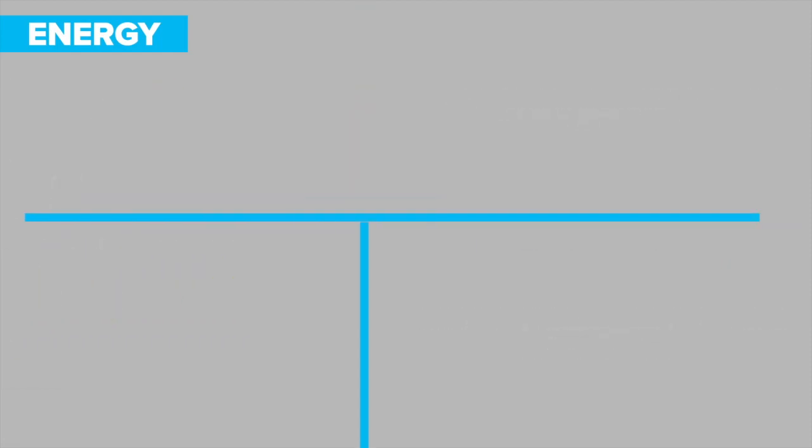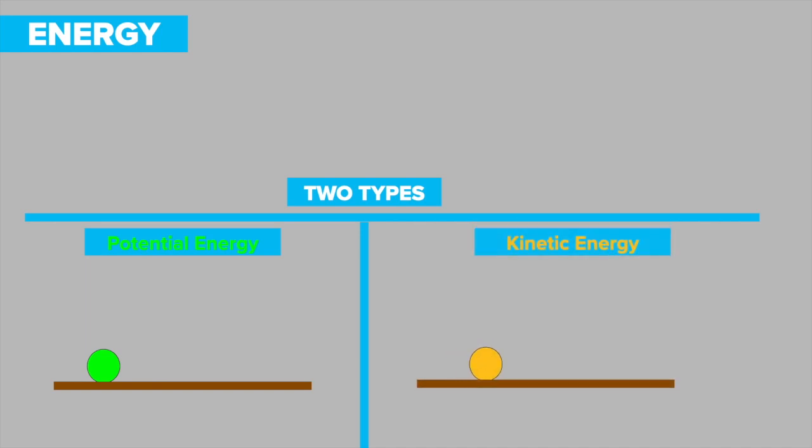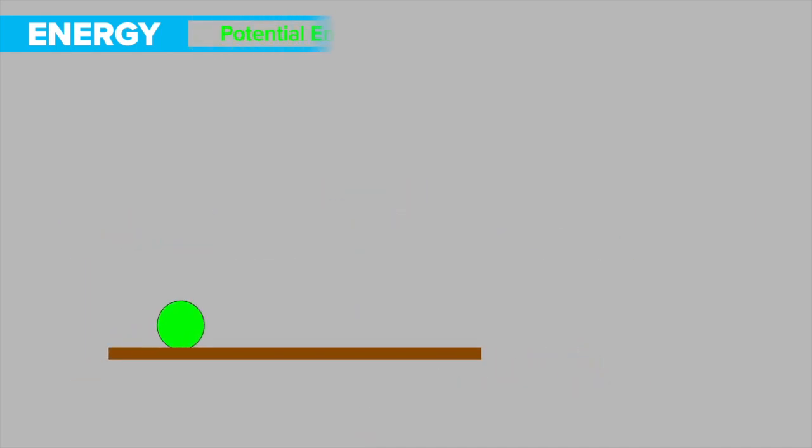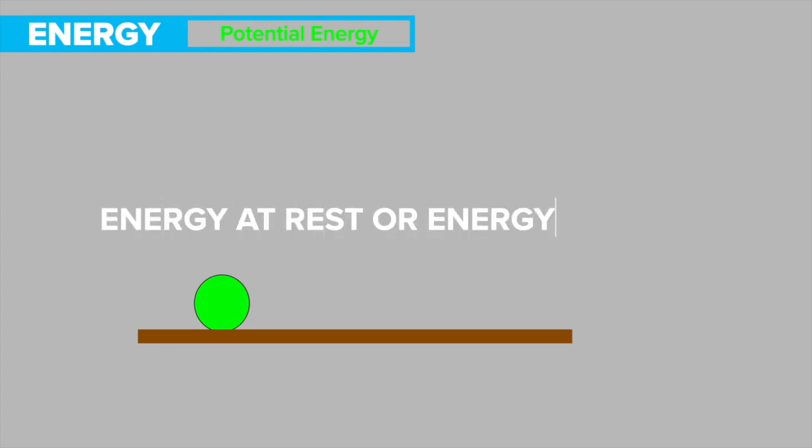Essentially, energy can be classified into two types: potential energy and kinetic energy. Potential energy is defined as energy at rest or energy stored, thus the name potential, because it is energy capable of doing work. Potential energy comes in many forms.